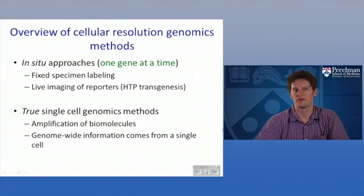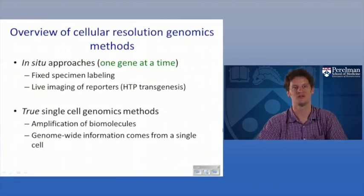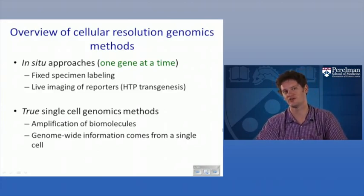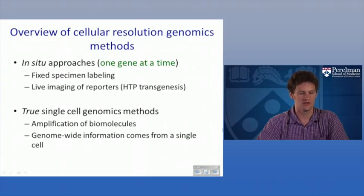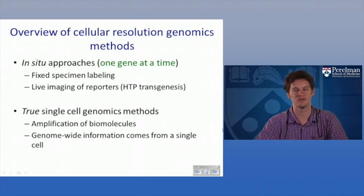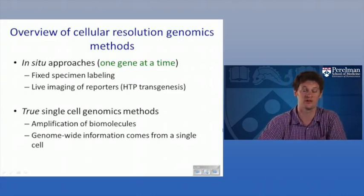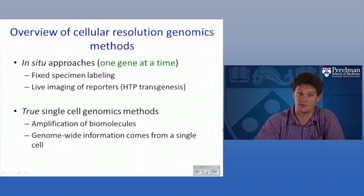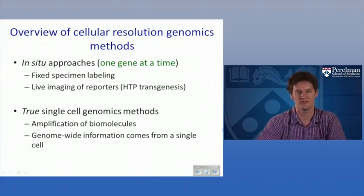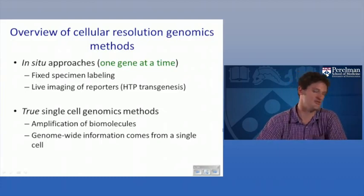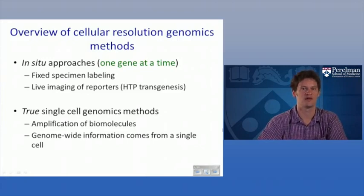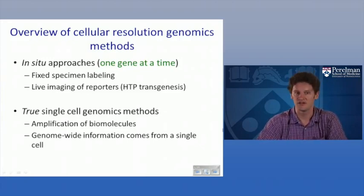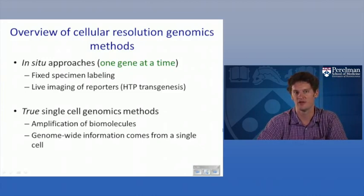Here's an overview of the kinds of methods that single cell resolution gives you. There are in situ approaches — fixed specimen labeling using ISH hybridization probes for particular mRNAs, or imaging of reporters in fixed specimens or live imaging over time. Those allow you to look across potentially all cells in some organisms like worms, but only for a small number of genes at a time. A true single cell genomics method lets you look in single cells at the whole genome — fundamentally different from in situ studies, and the focus of this lecture.